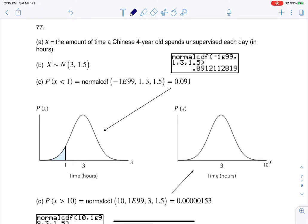Hey, Math43. I had a question coming out of Chapter 6, number 77, and here we were given some information about four-year-olds in China and how many hours a day they spend unsupervised. So we were told that they spend an average of three hours a day unsupervised with a standard deviation of 1.5, and that data was normally distributed.